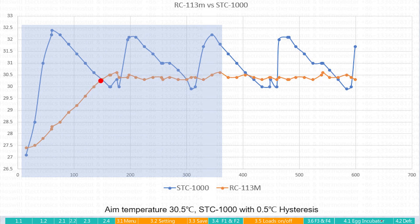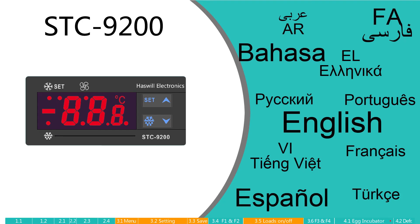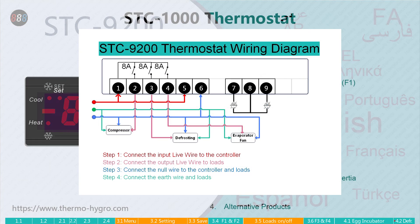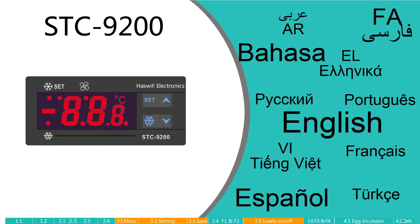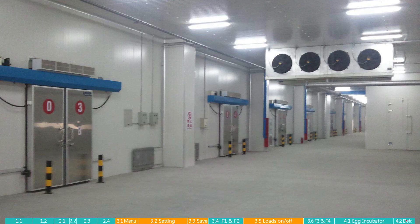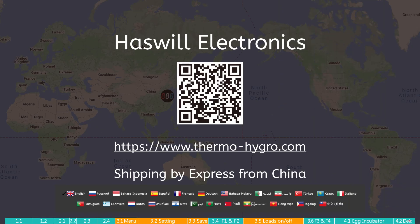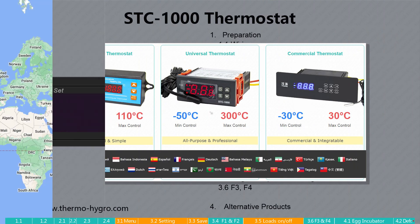At the same time, it brings less waste heat, which is why the temperature fluctuation range is smaller. The STC-9200 is a 3-in-1 controller which not only controls the temperature, but also handles defrosting and fan adjustment, making it more suitable for large-scale cold storage. Welcome to visit our website for more alternative products.